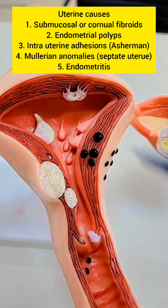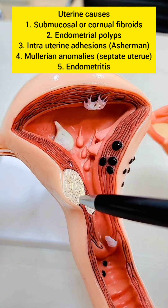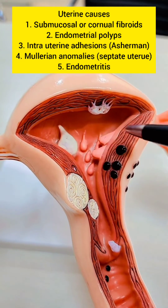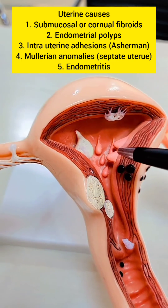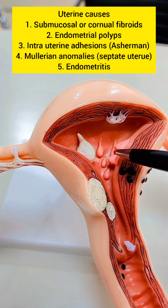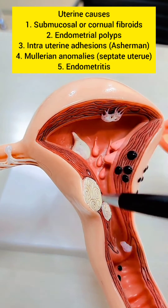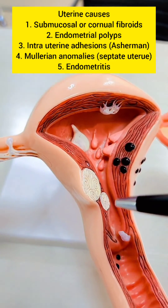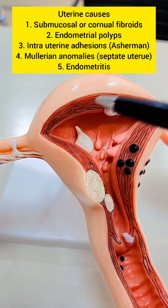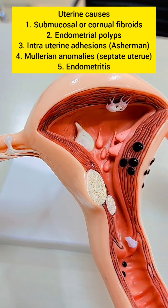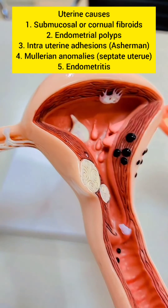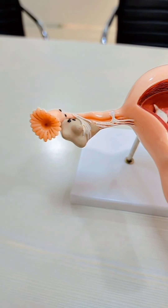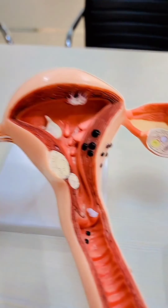Uterine causes could be because of a submucosal fibroid or a cornual fibroid, it could be because of endometrial polyps, it could be because of intrauterine adhesions, or it could be because of mullerian anomalies like a septate uterus. These are the common causes of female infertility.